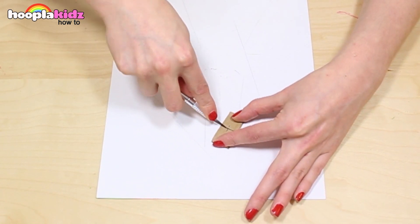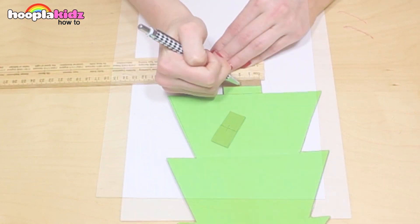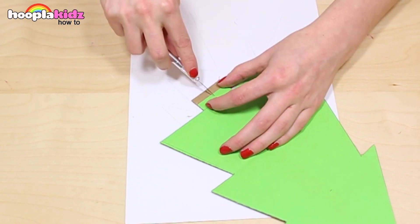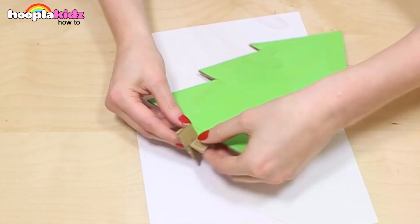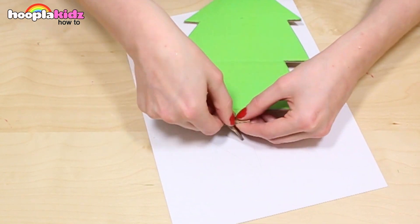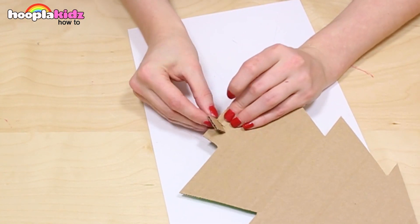I'm going to use my craft knife to create a slit on both the tree trunk and the additional piece of card. This means when it's put together the tree will stand up.